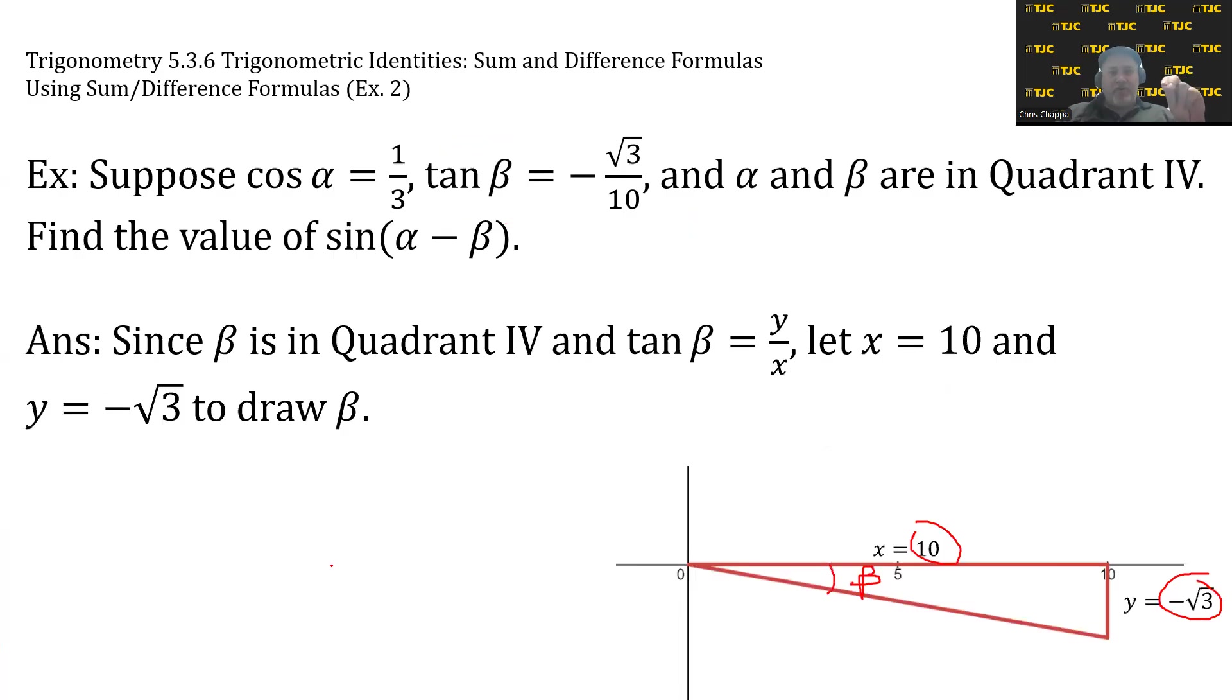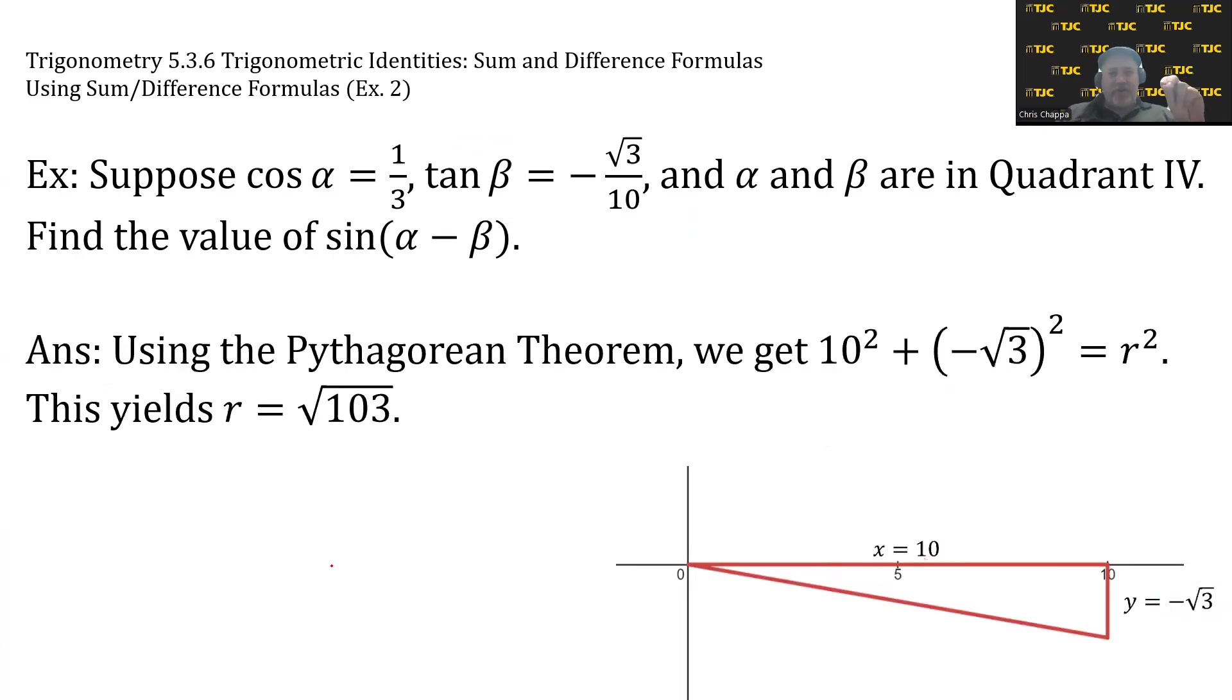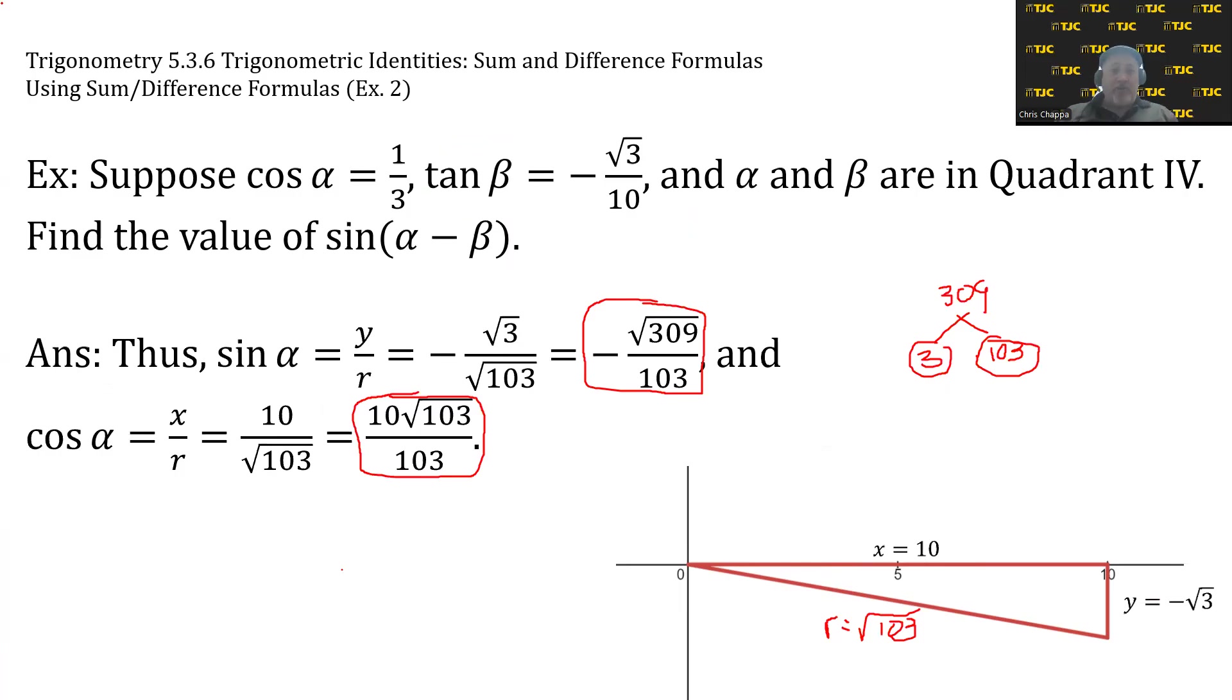All this time when I was saying alpha, I should have been saying beta. So sin β = -√309/103 and cos β = 10√103/103 after rationalizing the denominator. My apologies.